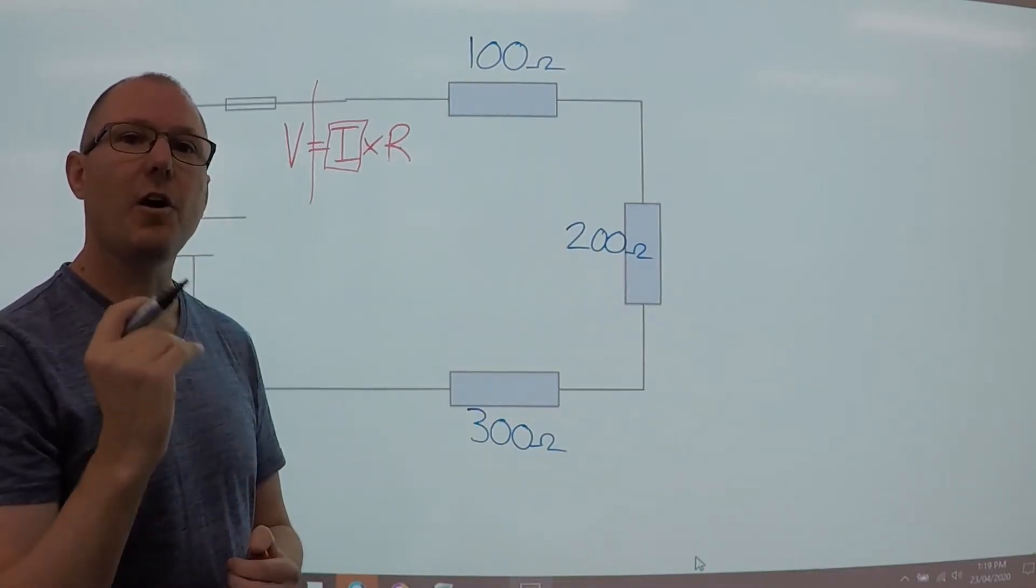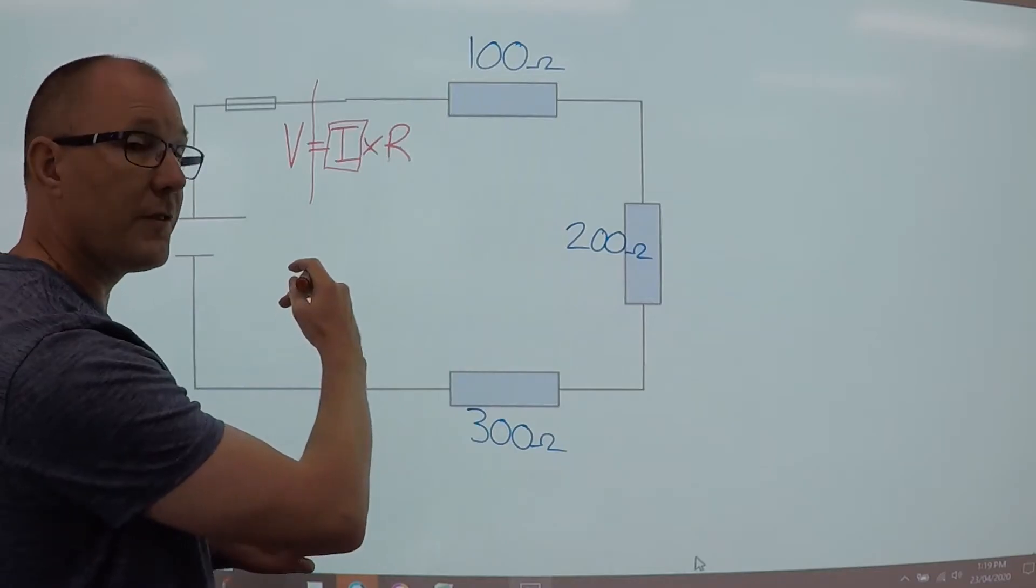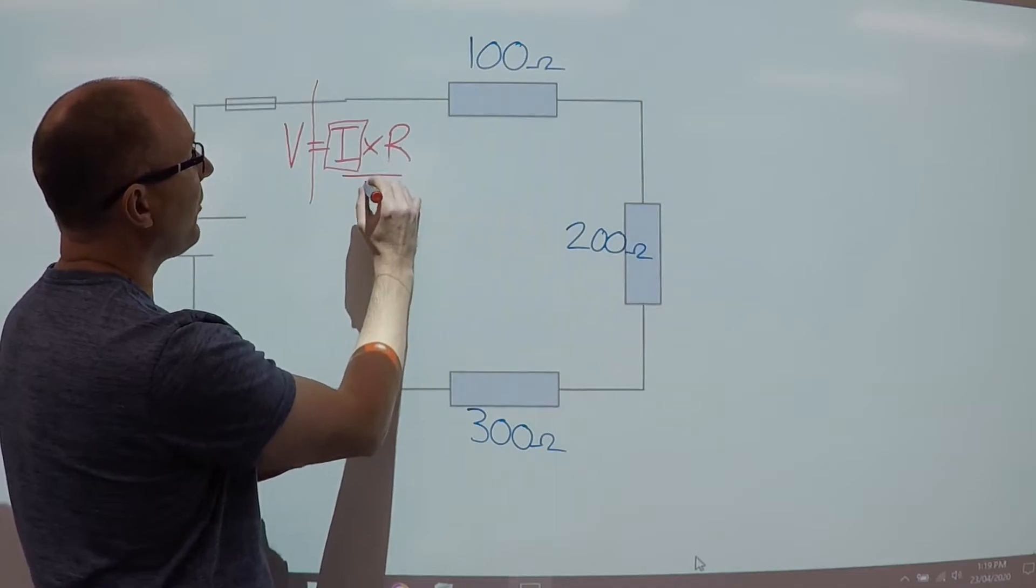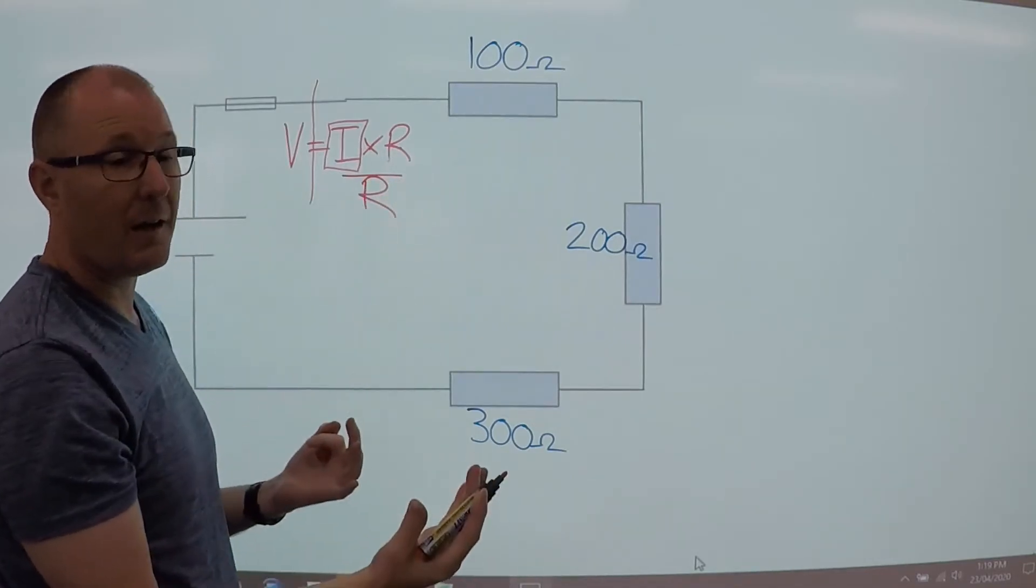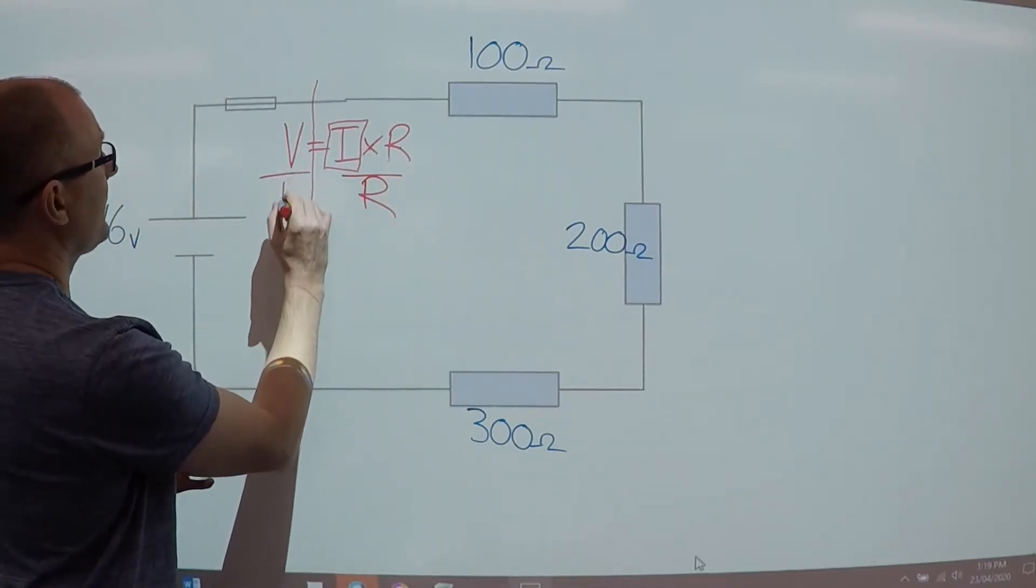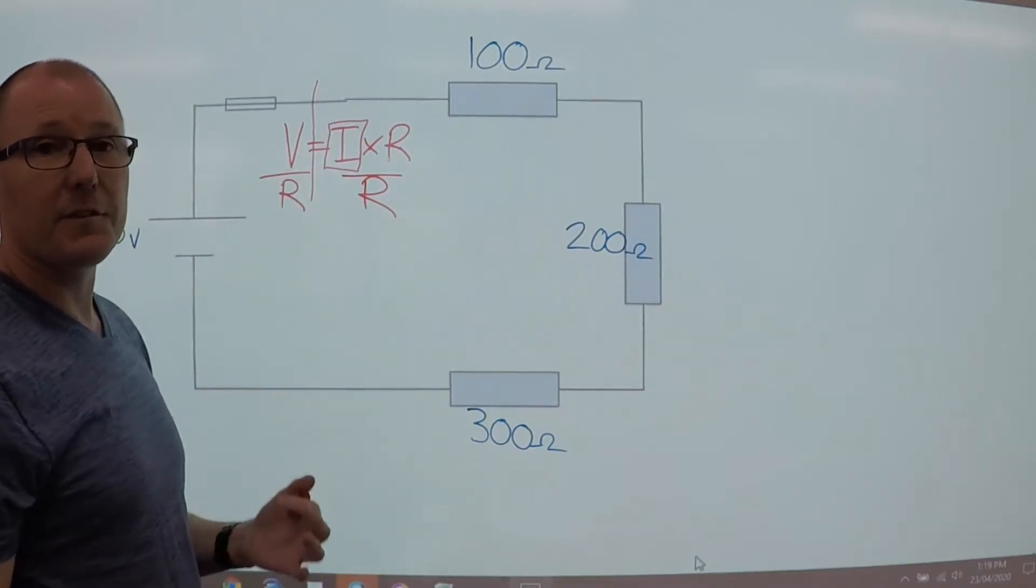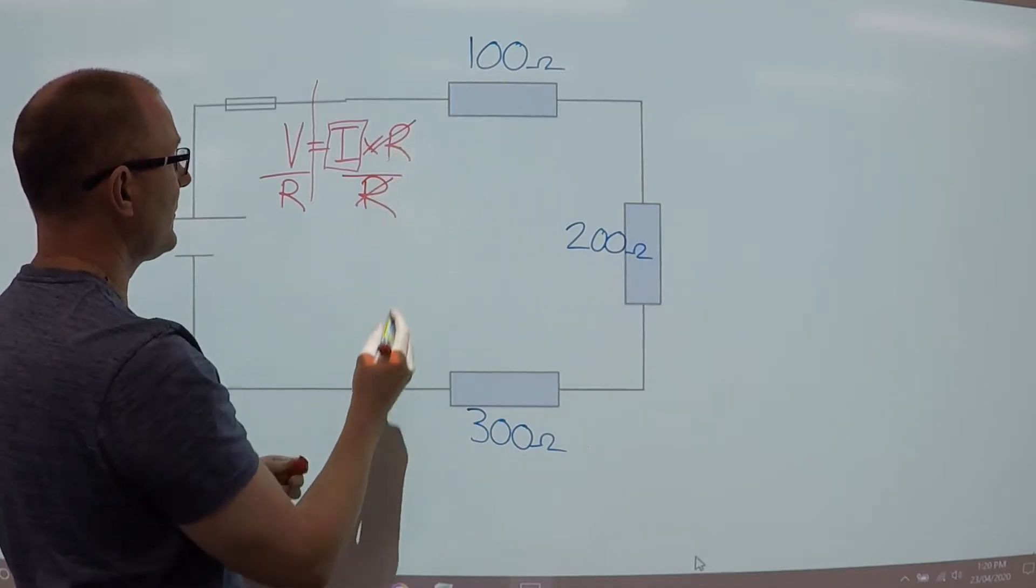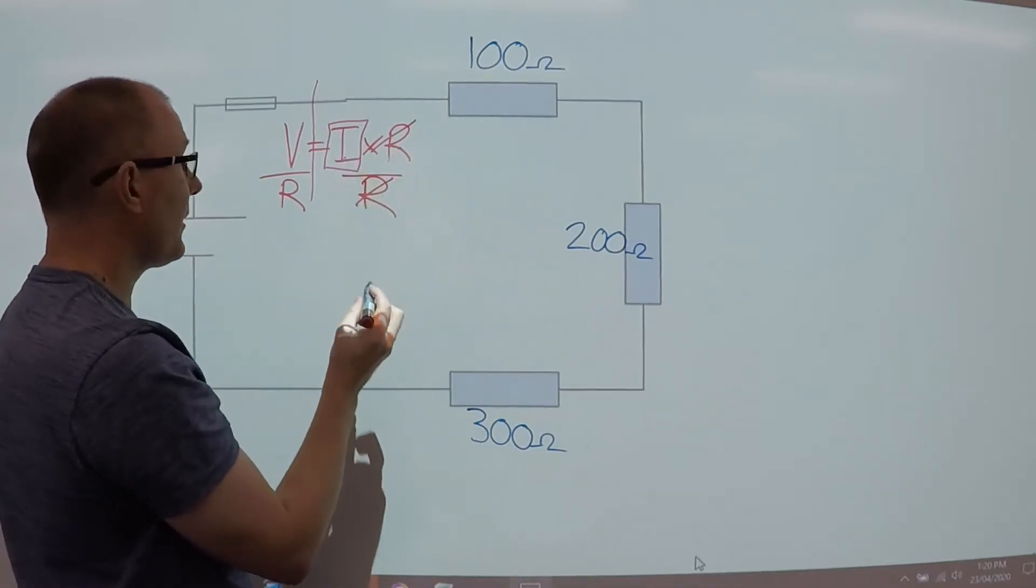I have to do the opposite when I move it across. So the opposite of multiply is divide. So I have to divide both sides by R. And the two R's on this side cancel each other out. They're now gone. So we're left with I by itself.